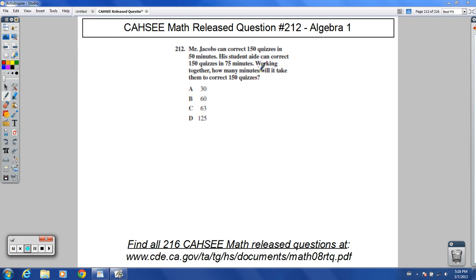Before you even start this question, let's think this through. If Mr. Jacobs by himself can correct 150 quizzes in 50 minutes, it's not going to take him longer than 50 minutes with help—he's going to correct them in less than 50 minutes. Therefore, choices B, C, and D do not make sense.